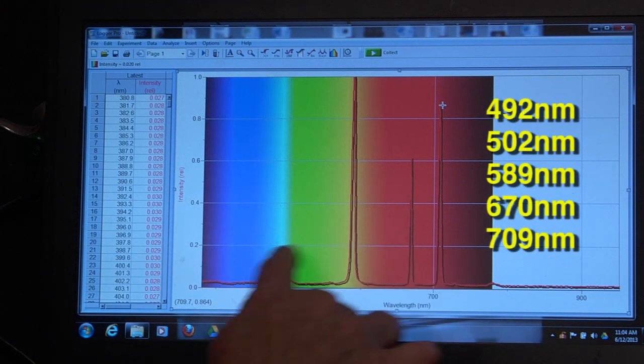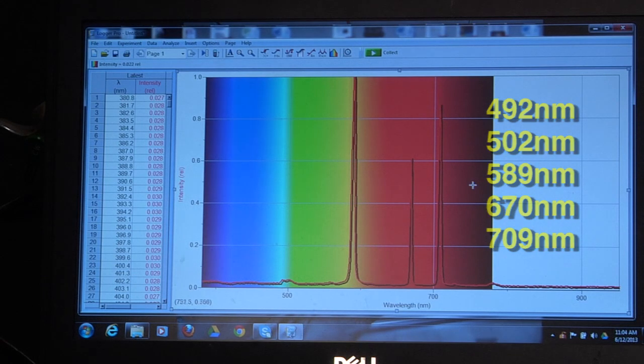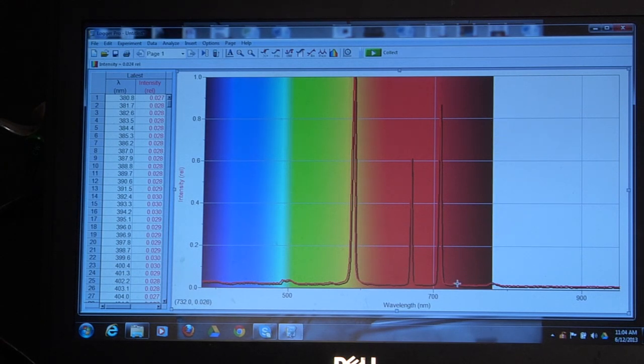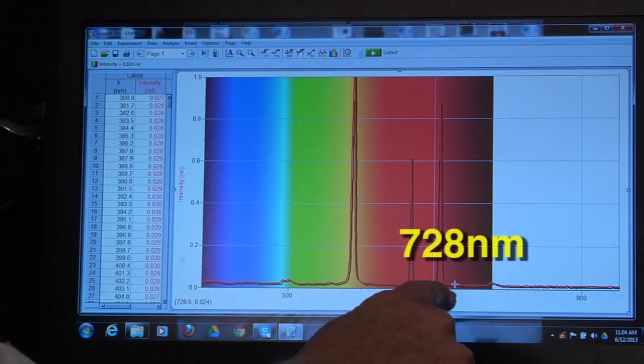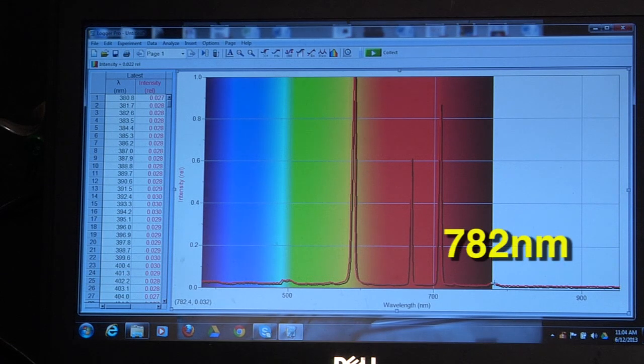So these five characteristic wavelengths. You can even see tiny ones here that are often very difficult to measure. One small one right here at 728 and another one here at 782.